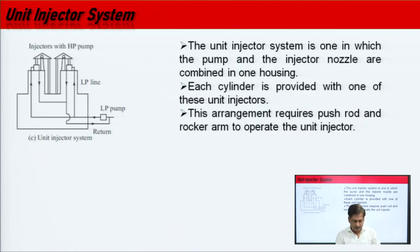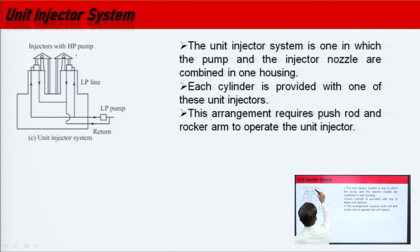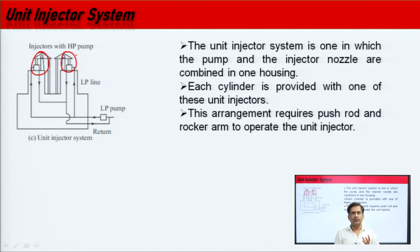In the unit injector system, the pump and injector nozzle are combined in one housing — similar to the individual type but with injector and pump all housed together. Each cylinder is provided with one of these unit injectors: single unit injector for single cylinder, multiple unit injectors for multi-cylinder engines. This arrangement requires a push rod and rocker arm to operate the unit injector, driven by the engine shaft. Partial power is taken from the engine to operate these injector systems.